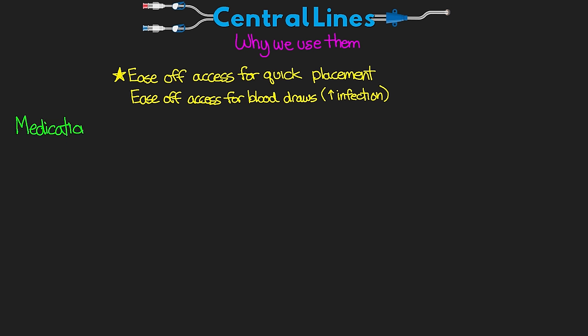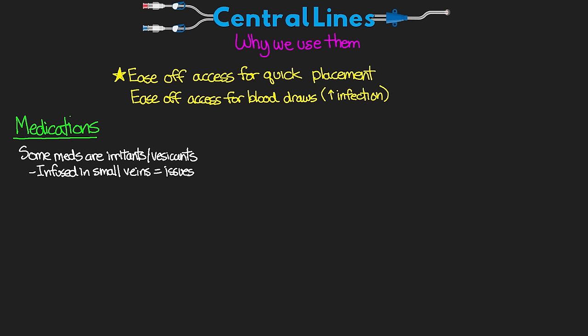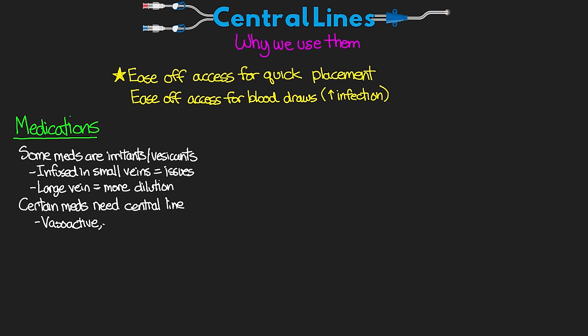The first category is drugs. Some drugs are irritants to the vessels — or vesicants — and when infused into smaller veins this can cause issues. By infusing into a large central vein, the medication has a lot more blood to mix and dilute with when it enters the vasculature. A good example is potassium, where we can give higher concentrations such as 20 mEq via a central line. We also have certain medications that must be administered via a central line, the most common being our vasoactive medications, although we prefer central line access but it's not necessarily required in an emergent situation.